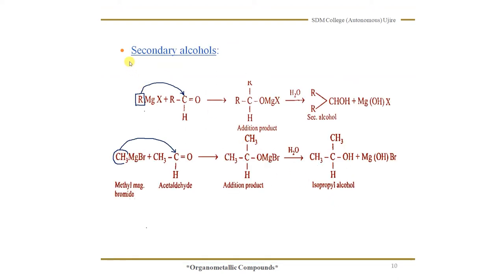Coming to the preparation of secondary alcohols — secondary alcohols can be prepared by the action of Grignard reagent on any aldehyde other than formaldehyde. R being partially negatively charged goes to the partially positively charged carbon, and MgX being partially positively charged goes to the partially negatively charged oxygen. This forms an addition product R-CH(R)-OMgX. It is then subjected to hydrolysis with water, forming R-CH(R)-OH, which is a secondary alcohol. The remaining byproduct is MgXOH.